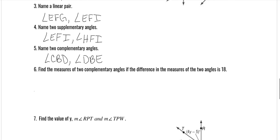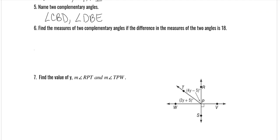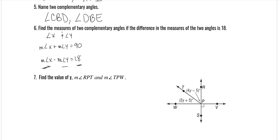Find the measures of two complementary angles if the difference in the measure of the two angles is 18. So you have two complementary angles — angle X and angle Y — and the measure of angle X plus the measure of angle Y has to be 90. But the difference has to be 18, so the measure of angle X minus the measure of angle Y is 18. What are the two numbers? This is a system of equations. What two numbers subtract to be 18 but also add together to be 90?